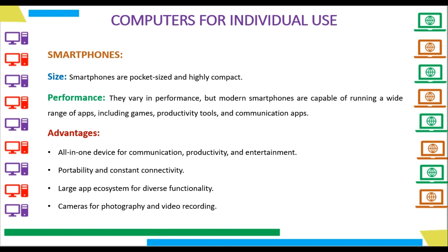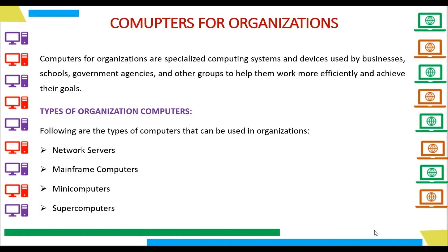So this was all about computers for individual use. Now we will learn about the computers that can be used in organizations. These computers are not the same as computers for individuals. Computers for organizations are specialized computing systems and devices used by businesses, schools, government agencies, and other groups to help them work more efficiently and achieve their goals. Following are the types of computers that can be used in organizations: network servers, mainframe computers, mini computers, and supercomputers. We will study size, usage, and advantages of all these four types.